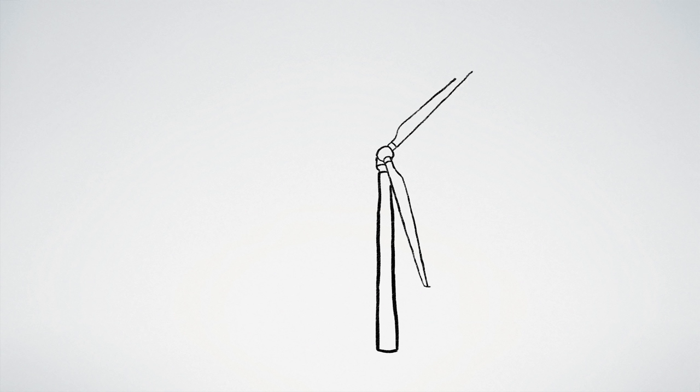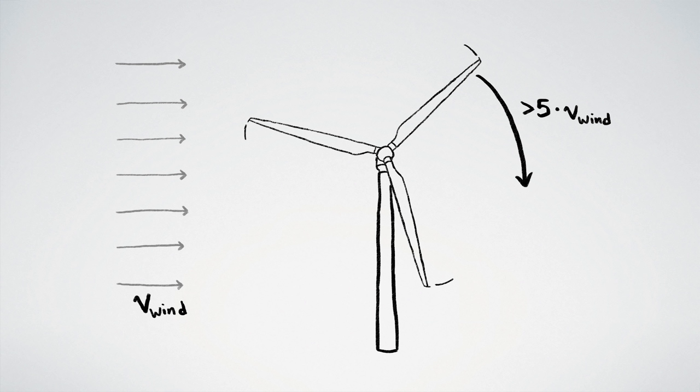Windmill blades are a bit more complicated, but it's roughly the same idea. For decent efficiency, a windmill blade should move through the air at least five times faster than the incoming speed of the wind, though obviously different parts of the windmill blade are moving at different speeds, and so the shape varies along the length of the blade.